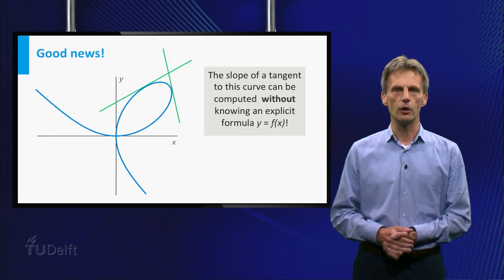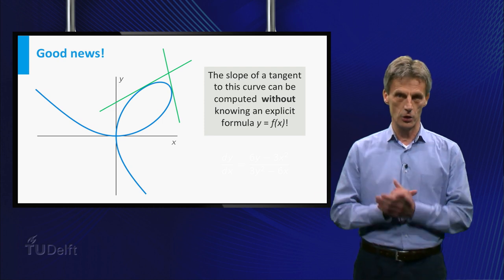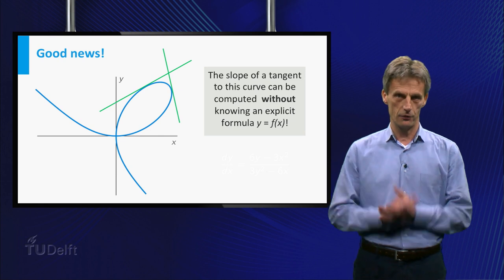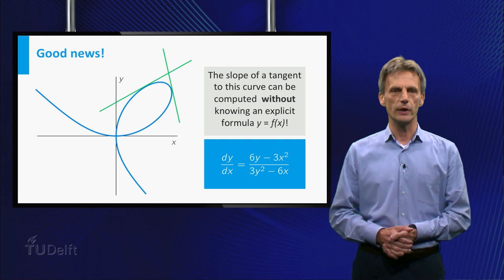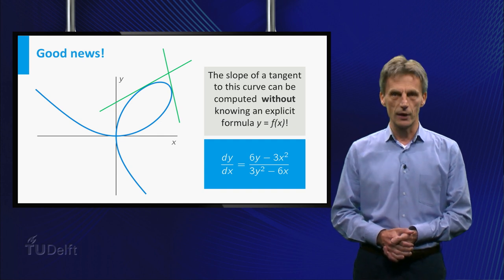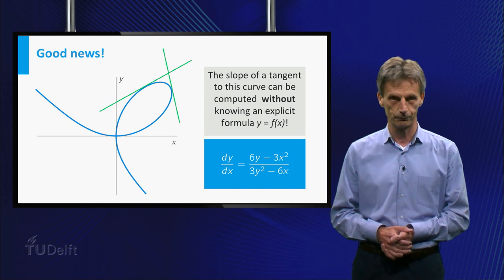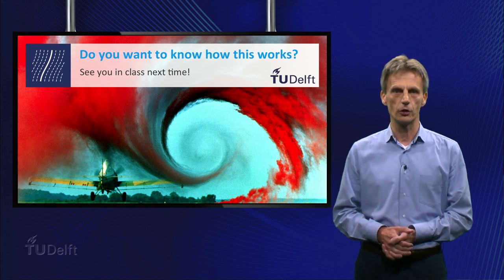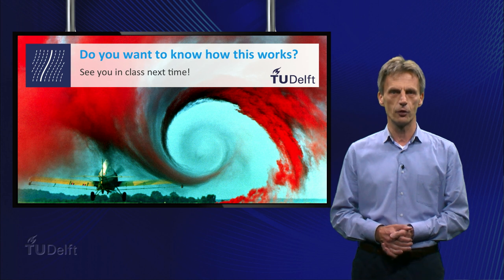With this new technique, the slope of a tangent line to this curve can be computed without knowing an explicit formula y is equal to f. This is the power of the technique of implicit differentiation: you can find the formula for dy/dx without having to find an explicit formula for y in terms of x first. You are going to learn in class how this technique works — not just for this curve, but for any curve given by some relation between the two variables x and y.